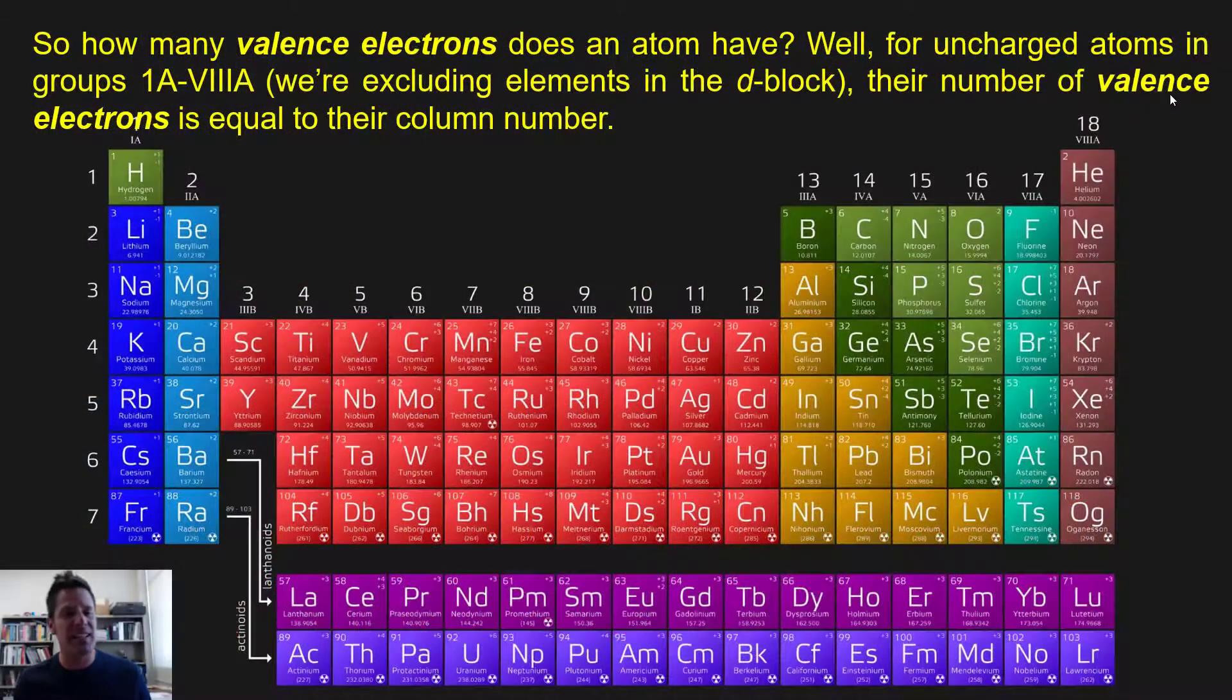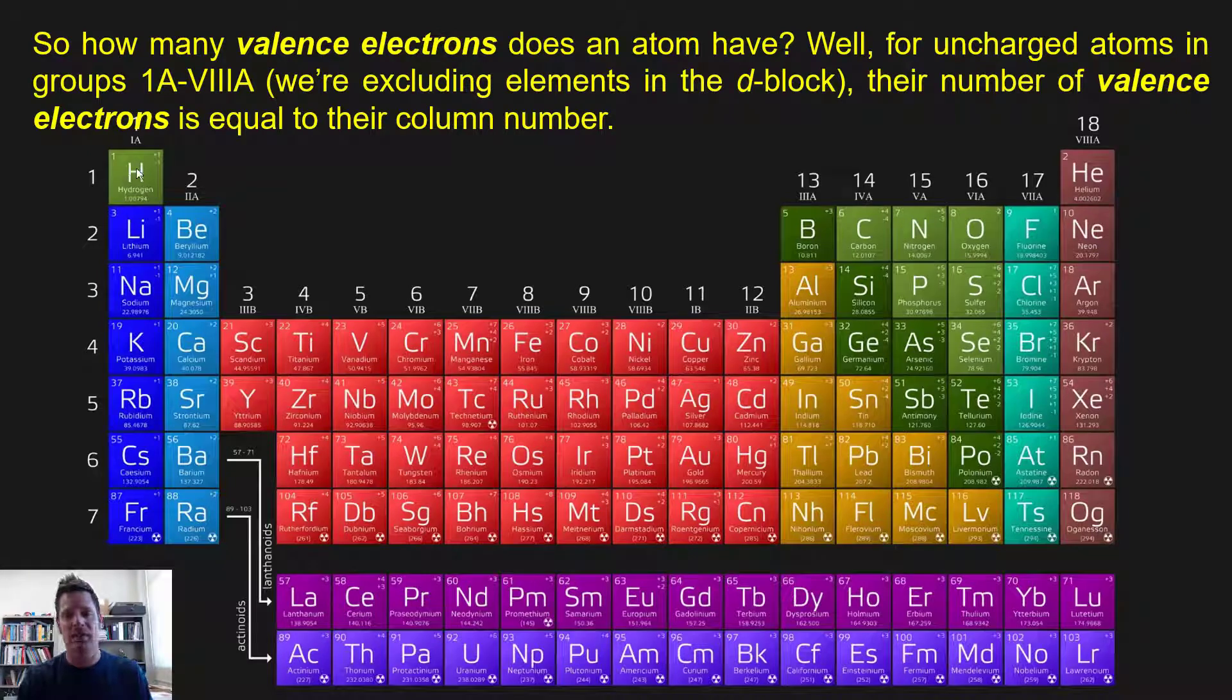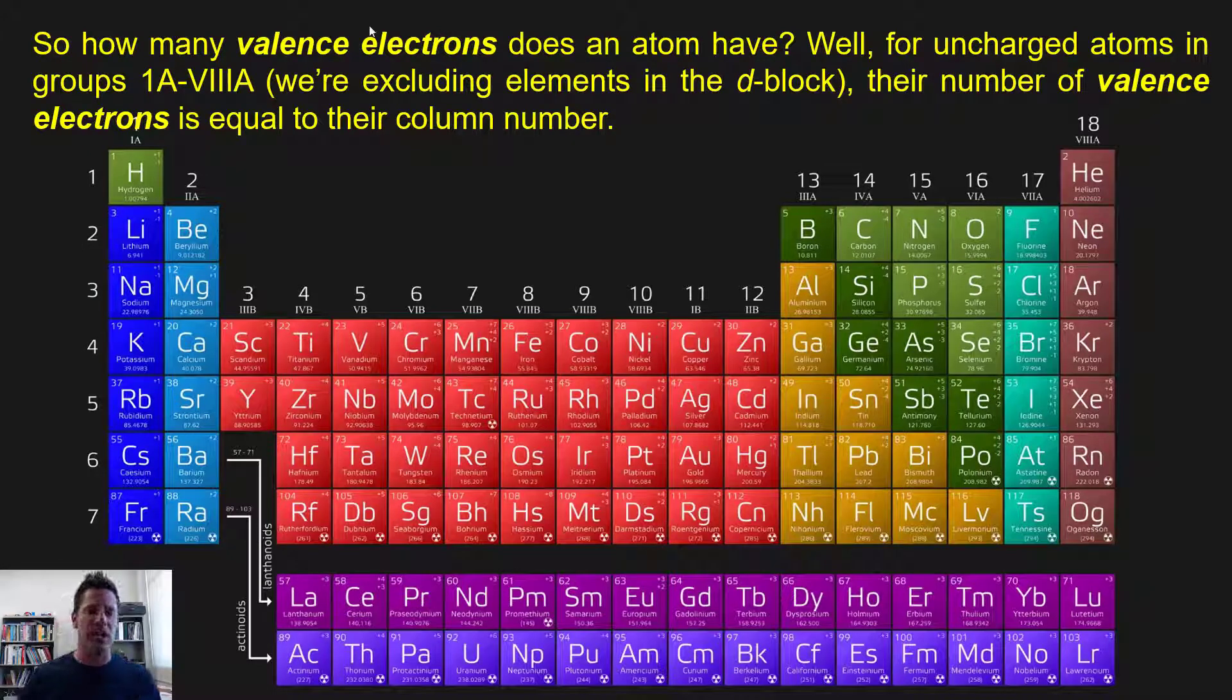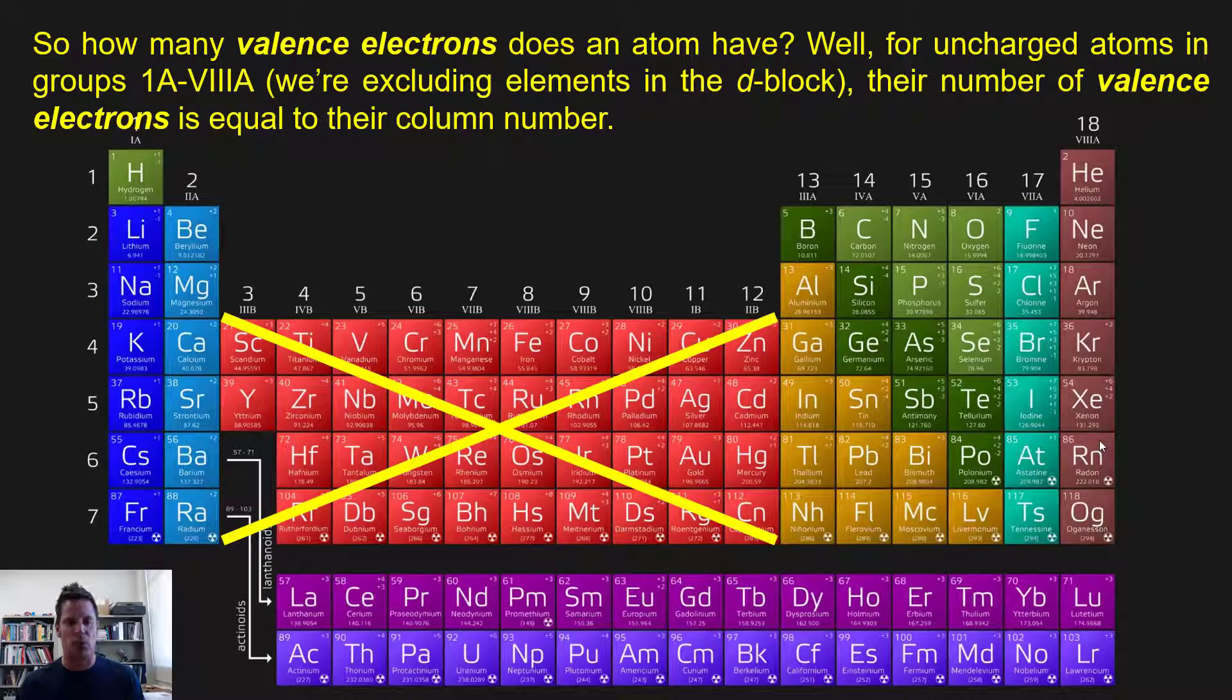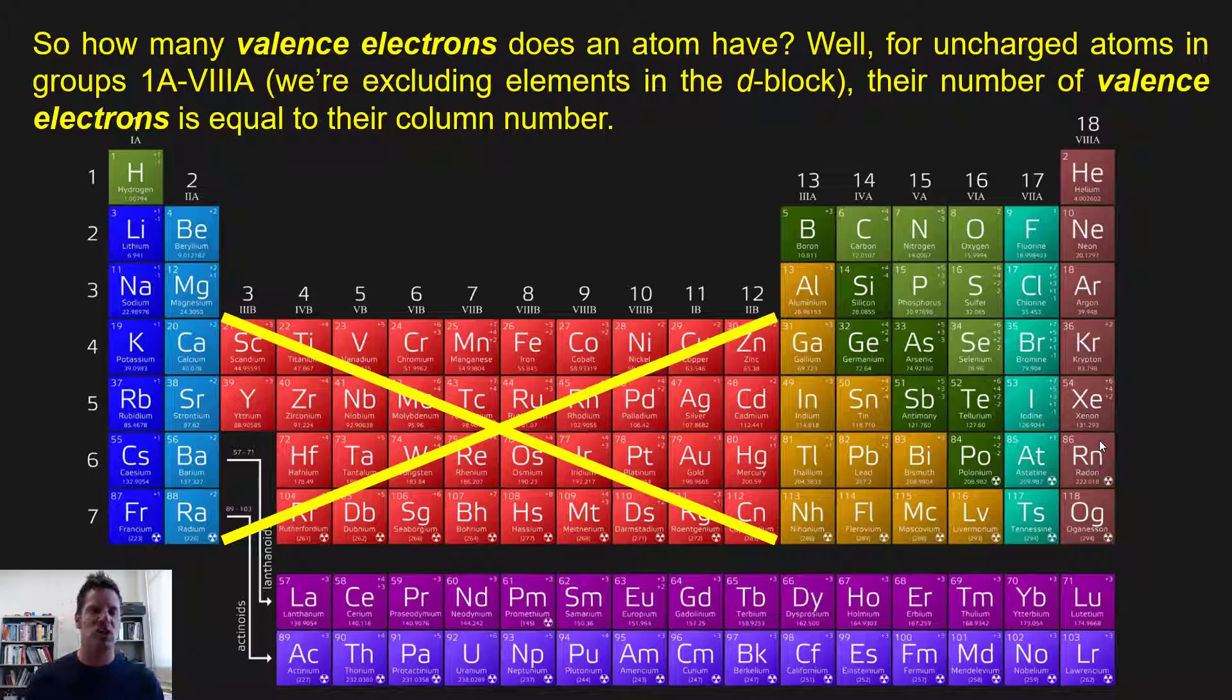So how many valence electrons does an atom have? Well, for uncharged atoms in groups 1A, that's this column right here, all the way through 8A. So I'm excluding all of the elements in the D block. The D block is this red block of elements that have Bs next to their column numbers. So excluding the D block, the number of valence electrons is equal to the column number.